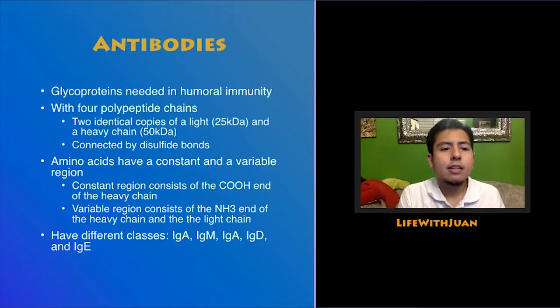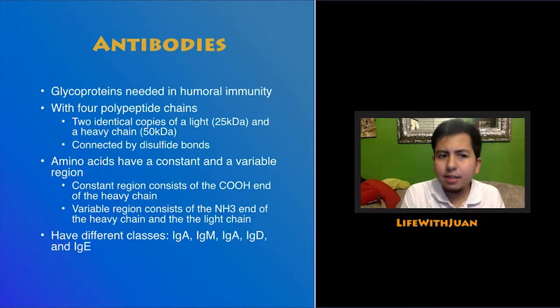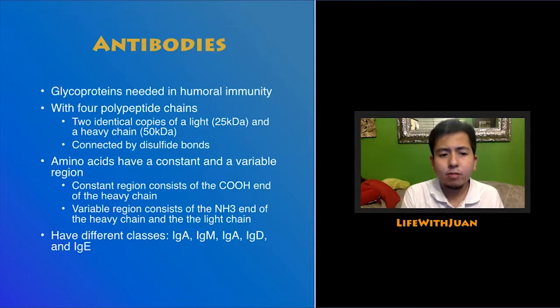What are antibodies? These are important glycoproteins — sugar-protein complexes — needed in humoral immunity. They consist of four polypeptide chains: two light chains and two heavy chains, all connected by disulfide bonds. They have constant and variable regions. The constant region consists of the carboxyl end of the heavy chain, and the variable region consists of the amino end of the heavy chains and the light chains. There are five different classes of antibodies.